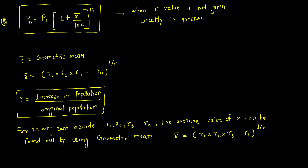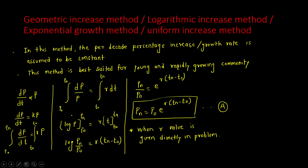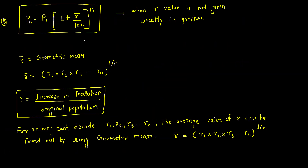So, r̄ = (r₁ × r₂ × … × rₙ)^(1/n), where each r is found using: increase in population divided by original population. This will become clearer when we solve problems. To summarize: in the Geometric Increase Method, the per-decade percentage increase is assumed constant. If R is given directly, use Formula A; if not, use Formula B.